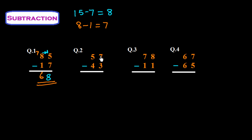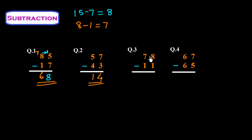In question number 2, the unit place numbers are 7 and 3. Since 7 is greater than 3, we can easily subtract: 7 minus 3 is 4, and 5 minus 4 is 1, giving us 14. In question number 3, which is 78 minus 11: 8 minus 1 is 7 and 7 minus 1 is 6, so the answer is 67.